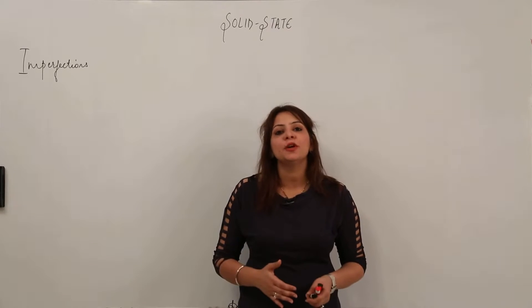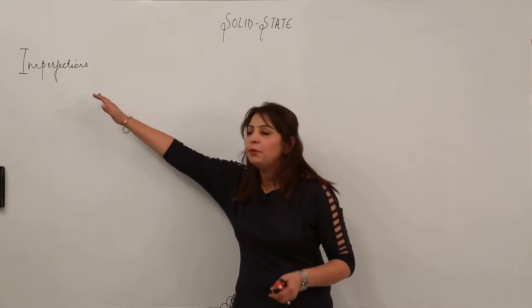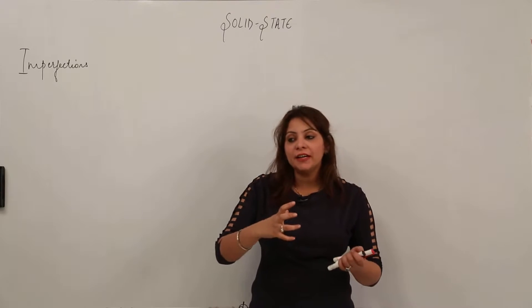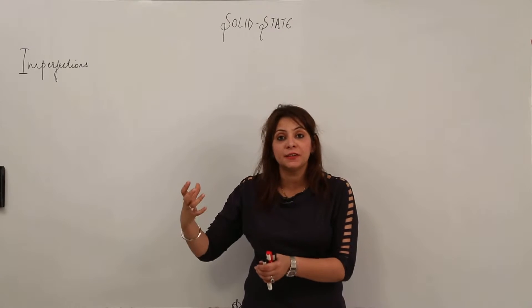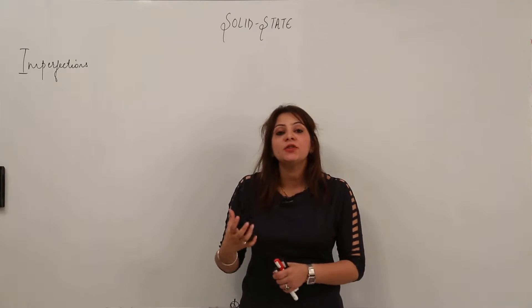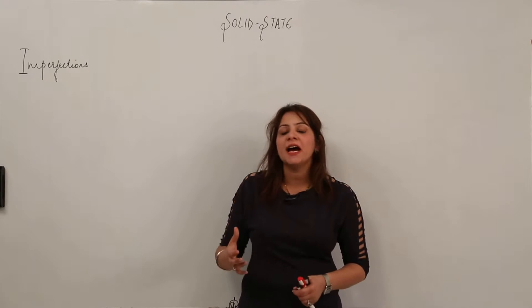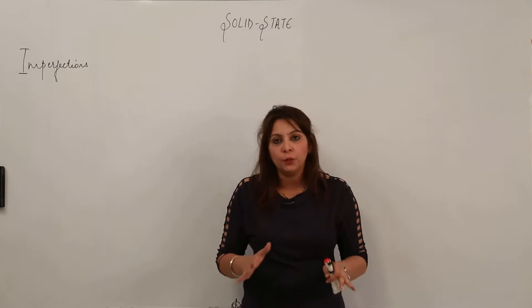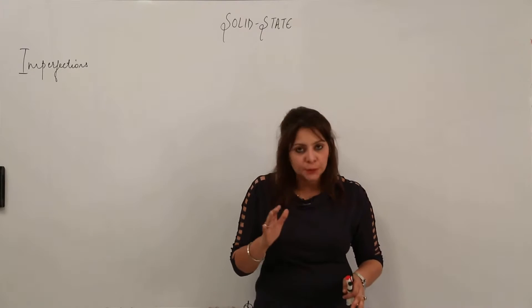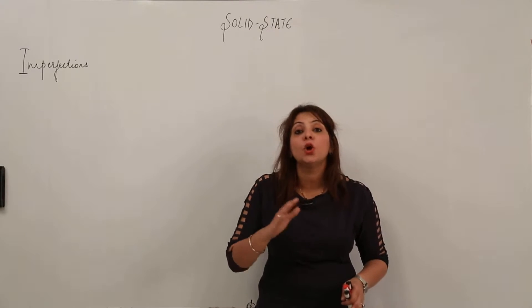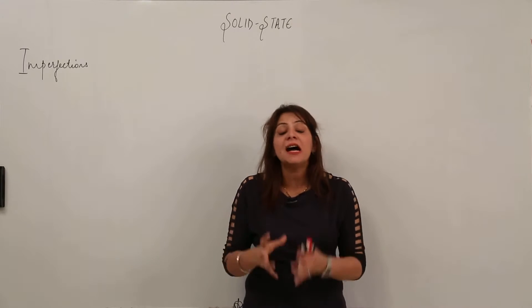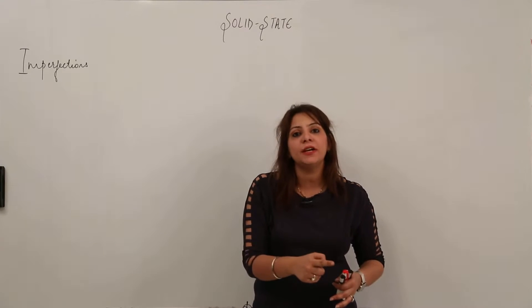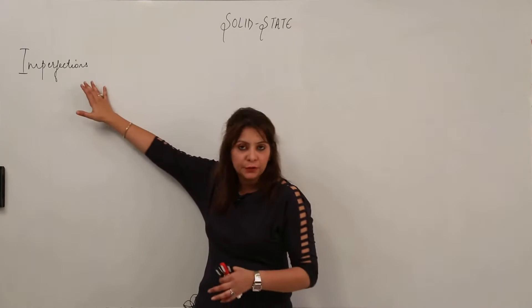We are going to start with the new topic of solid state — imperfection. When we say imperfection, that means the substance is lacking in its perfectness. We get to see certain kinds of imperfections. In the whole world, nothing is perfect; even things that appear to be perfect are not actually perfect. There are certain irregularities that exist in substances, and those irregularities are the main cause of imperfection.